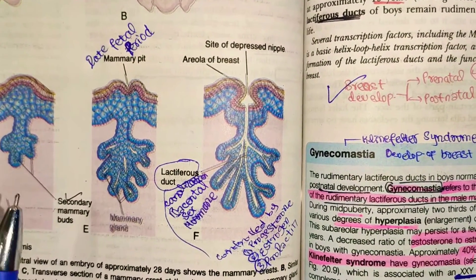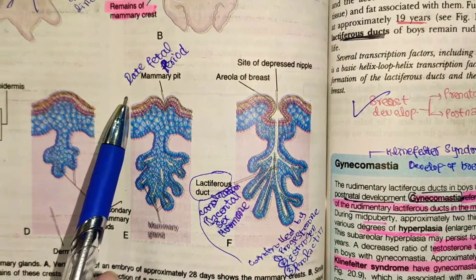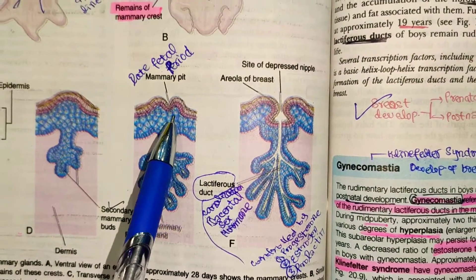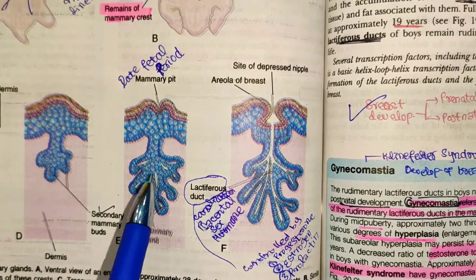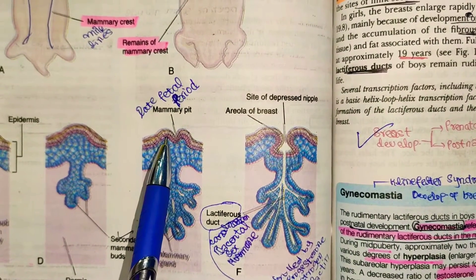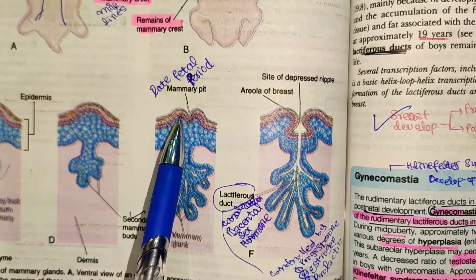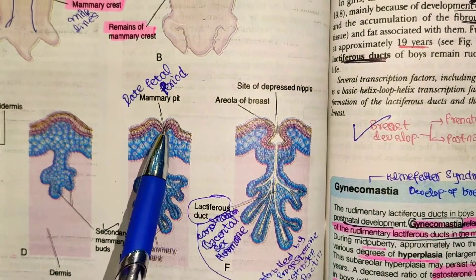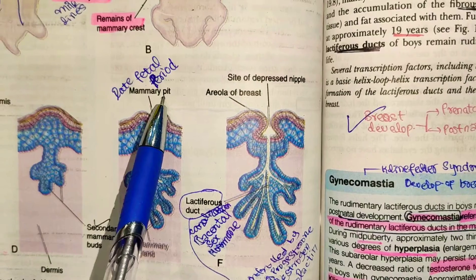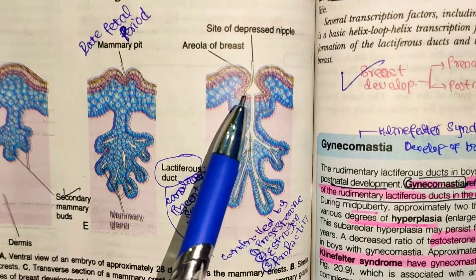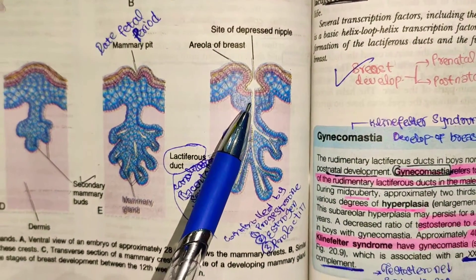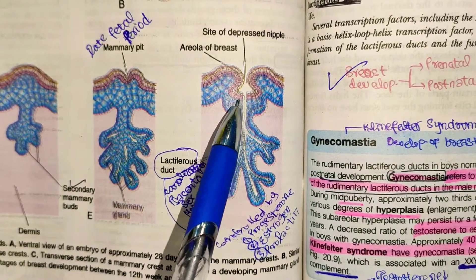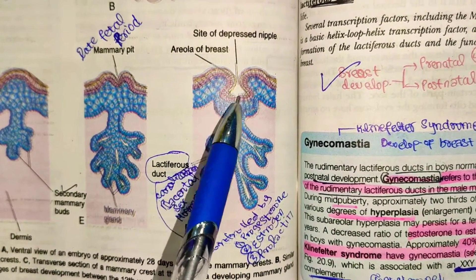After that, we enter the late fetal period. During the late fetal period, the epidermis at the site of the mammary gland region becomes depressed — this is called the mammary pit. In the prenatal period, the nipple position is depressed.